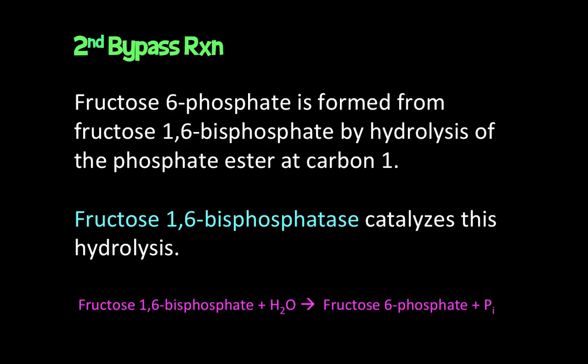Instead, fructose 1,6-bisphosphatase does something much simpler and more energetically favorable. It simply clips off one of the phosphate groups — the phosphate at carbon one — by simple hydrolysis. So you go from fructose 1,6-bisphosphate, clip off one phosphate, and you're left with fructose 6-phosphate. Very simple reaction rather than going through all that trouble trying to make ATP.